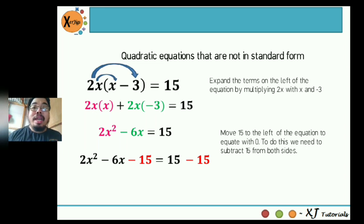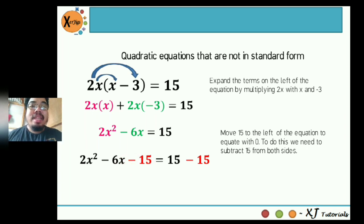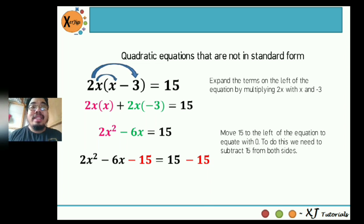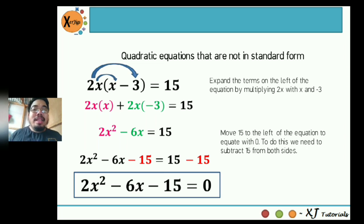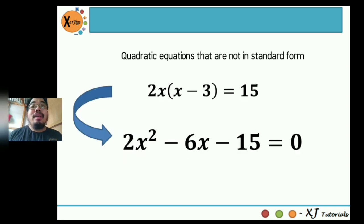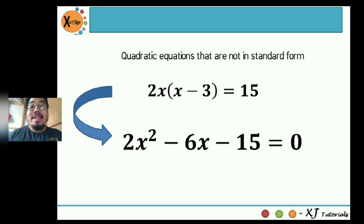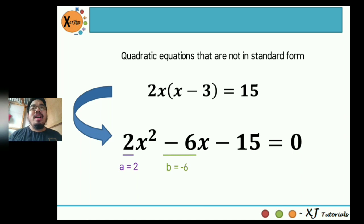The next thing we need to do is move 15 to the left side of the equation to equate with zero. To do this, we subtract 15 from both sides — minus 15 on the right and minus 15 on the left. So our final answer is 2x squared minus 6x minus 15 is equal to zero. From a quadratic equation not in standard form, it is now in standard form. We can now identify: a is positive 2 beside x squared, b is negative 6 beside x, and c is negative 15.